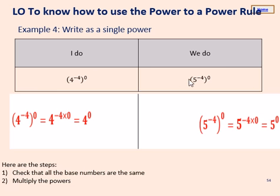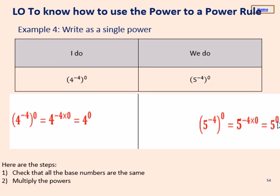For the last we-do: 5 to the power of negative 4, all raised to the power of 0. So 5 to the power of negative 4 times 0 equals 5 to the power of 0. That's your final answer — 5 to the power of 0. Really well done if you got that right, give yourself a tick.